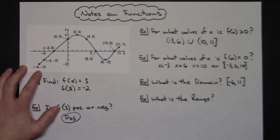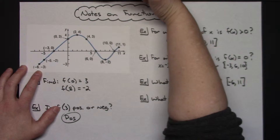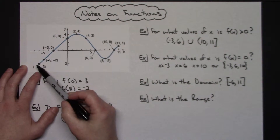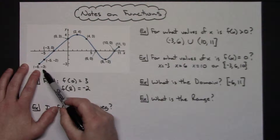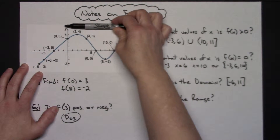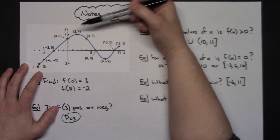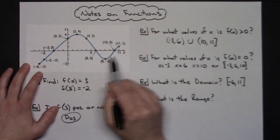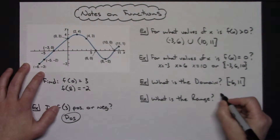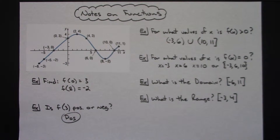Range is your y values — what's the lowest y value and what's the absolute highest? The lowest point of the function has a y value of negative 3; it's a solid dot so it's included. The highest point has a y value of 4 and it is also included. So the range is [negative 3, 4].